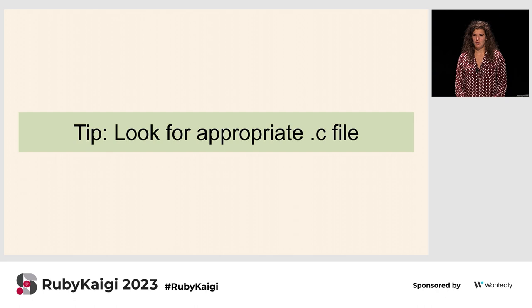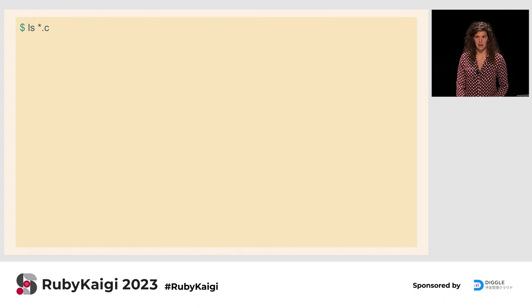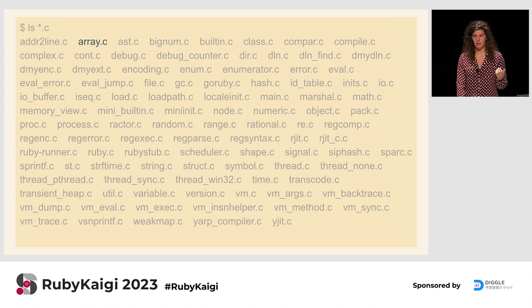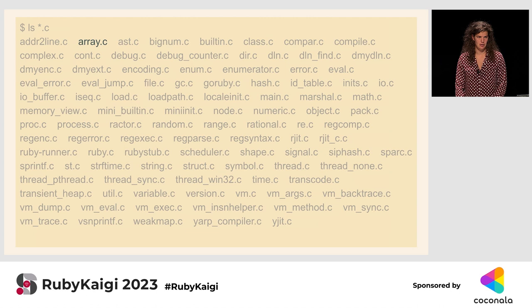Another tip is to look for an appropriate .c file. In many cases, whatever you're investigating will have a .c file right in the root directory — definitely for all of the objects. If we `ls *.c` in the Ruby root, we get all of these files, including array.c, which is clearly the file we're after.